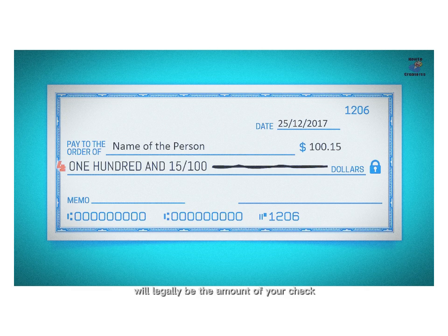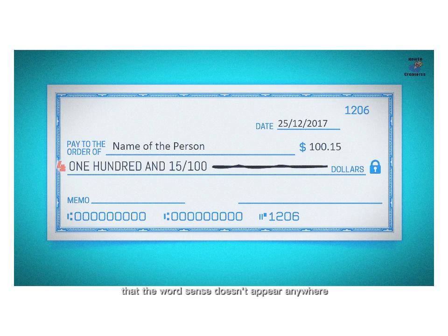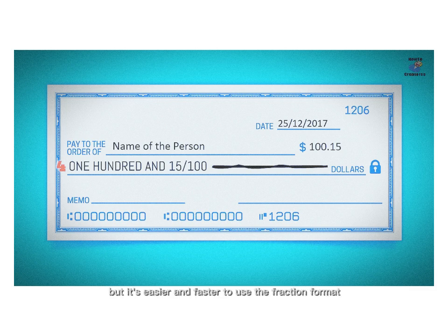Use all capital letters, which are harder to alter. Write this all together on one line, so that it reads $100.15 over 100. You might notice that the word 'cents' doesn't appear anywhere — you don't need to use it when writing a check. It is sufficient to simply put the number of cents into the fraction format, as in the picture. If you want, you can write '15,' but it's easier and faster to use the fraction format.